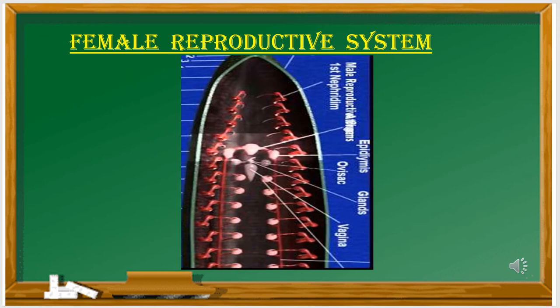Ova are budded off from the ovaries. From each ovary runs a short oviduct. The oviducts of the two sides join together to form a common oviduct. The common oviduct opens into the pear-shaped vagina, which lies mid-ventrally in the posterior part of the 11th segment. So the vagina opens at the posterior part of the 11th segment.